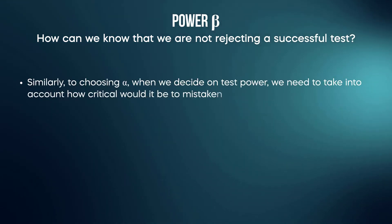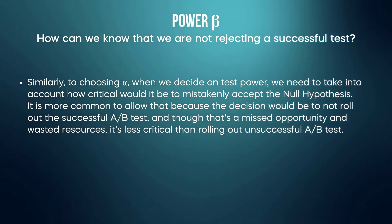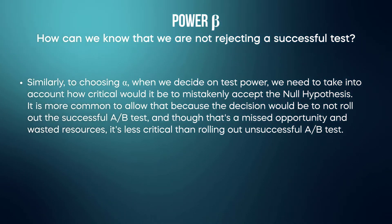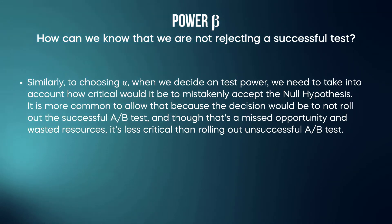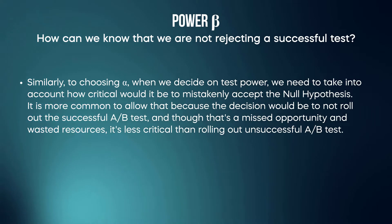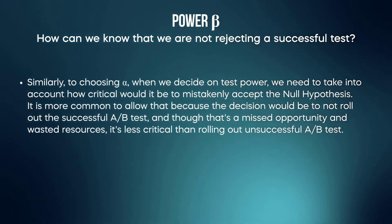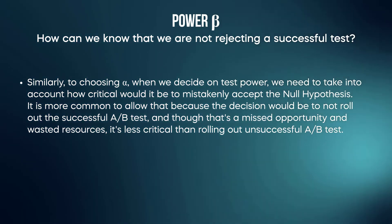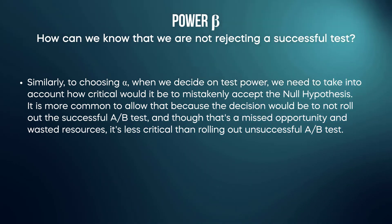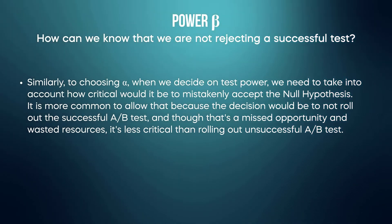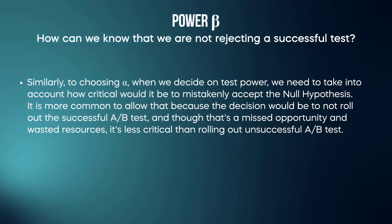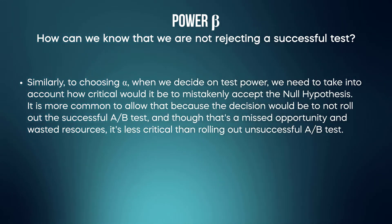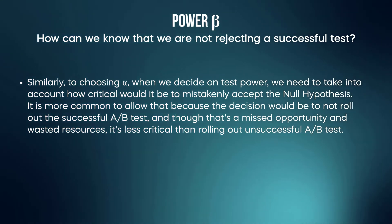Similarly to choosing alpha or the statistical significance level, when we decide on test power we need to take into account how critical it would be to mistakenly accept the null hypothesis — thinking there is no impact when there actually is. It is more common to allow mistakenly accepting the null hypothesis, because the decision would be to not roll out a successful A/B test. Though that's a missed opportunity and wasted resources, it is less critical than rolling out an unsuccessful A/B test.